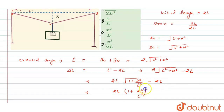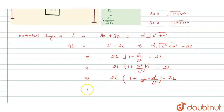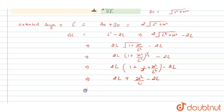Applying the expansion: ΔL = 2L[1 + (1/2)(x²/L²) − 1]. Simplifying: ΔL = 2L × x²/(2L²) = x²/L. The 2L terms cancel, so ΔL = x²/L.